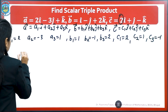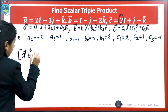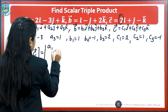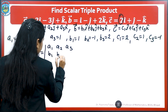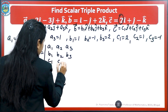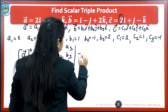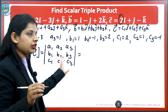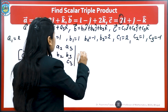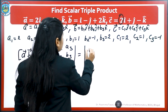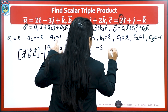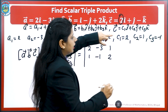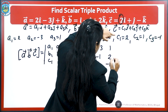After identifying these values, we apply the formula: the scalar triple product of a, b, c is the determinant of a1, a2, a3; b1, b2, b3; c1, c2, c3. Writing in the values of the coefficients, this determinant is: first row 2, minus 3, 1; second row 1, minus 1, 2; and third row 2, 1, minus 1.